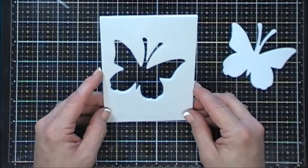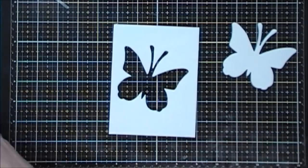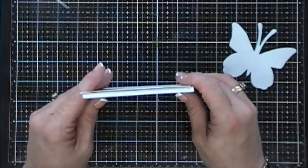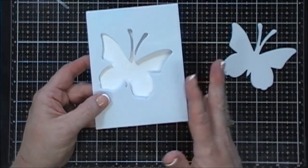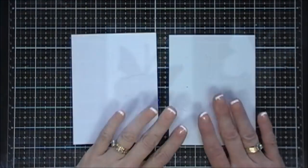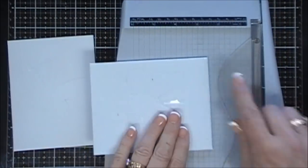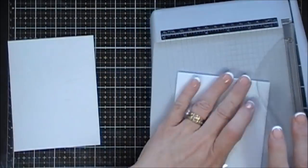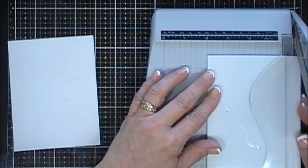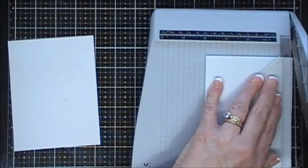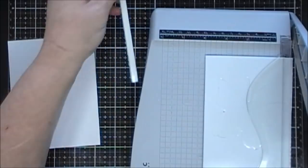What I want to do is trim down the foam front because it covers your entire card base. Now this is optional, you don't have to do this, but I always like a little bit of a white border. So I'm just going to grab my paper trimmer and I'm going to trim down a quarter inch off the right side here, and then I'm going to flip it and take a quarter inch off the top.